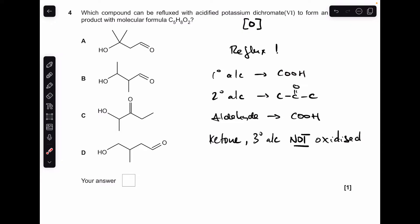Moving on to question four. Just to quickly run through what I've written up here. Potassium dichromate(VI) is an oxidizing agent. When you oxidize under reflux, a primary alcohol is converted to a carboxylic acid. Secondary alcohol oxidized to a ketone. Aldehyde oxidized to a carboxylic acid. And just a reminder that ketones and tertiary alcohols are not oxidized.